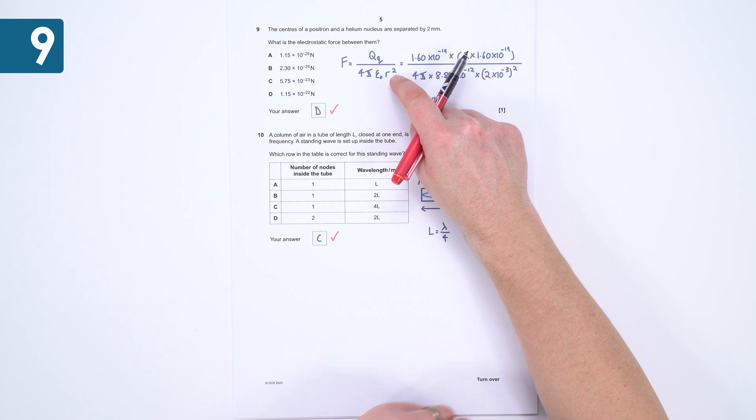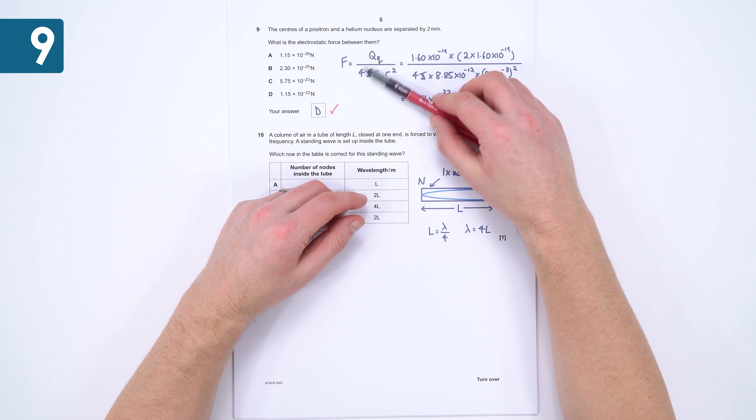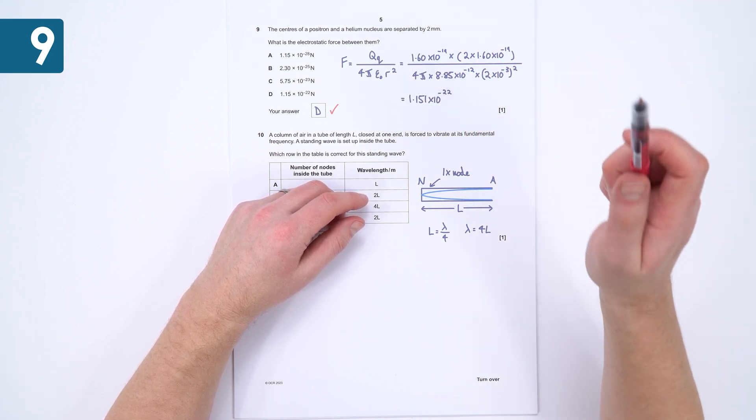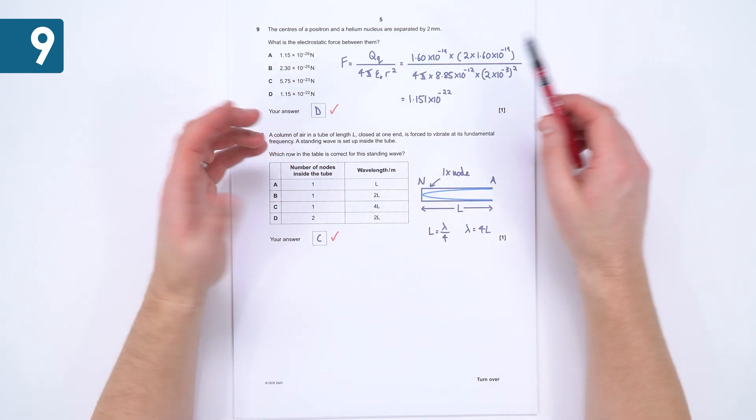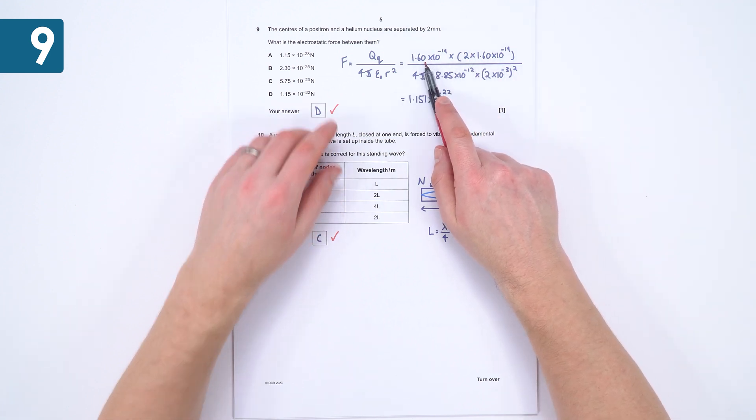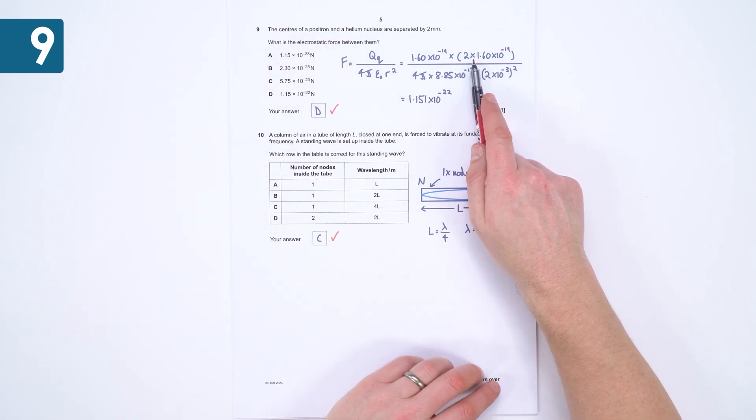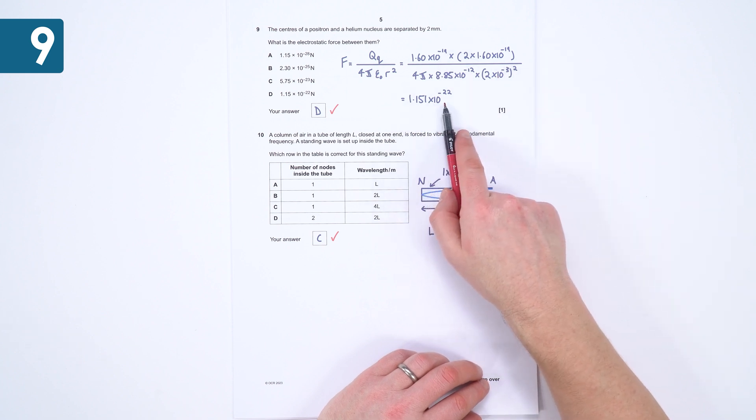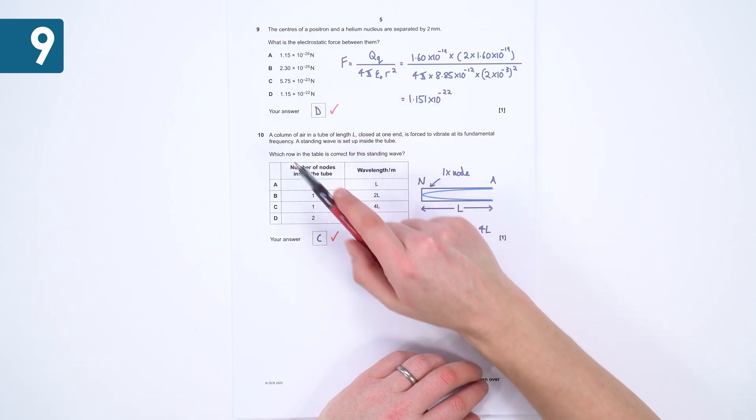We then have a question about two positive charges separated by a certain distance. The force between them, you know this, this is just in the equation sheet, qq over four pi epsilon naught r squared. It takes a while to actually write this out, so it might be that you just work straight into your calculator. So we've got the charge on the positron, and then we've got the charge on the helium nucleus, so that's going to be a charge of plus two, and then we just divide that by the distance in meters squared. A very small force of 1.15 times 10 to the minus 22. They're obviously all small numbers, but the answer here is D.